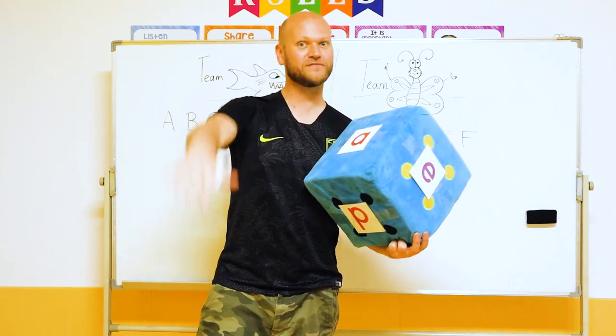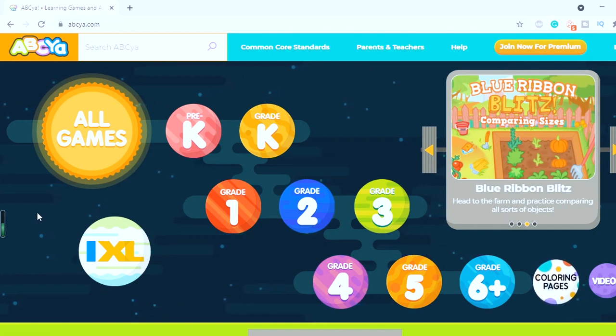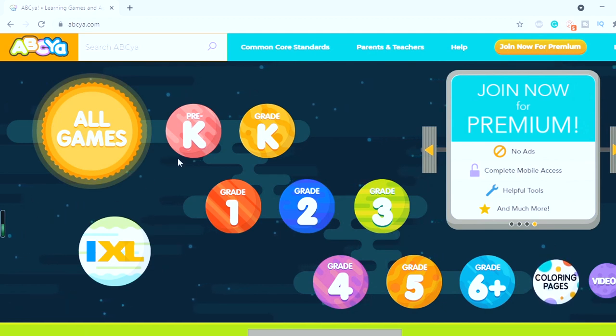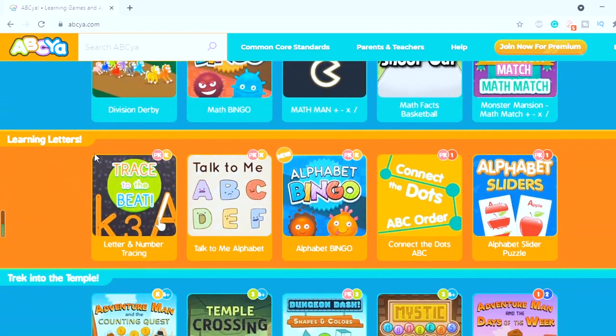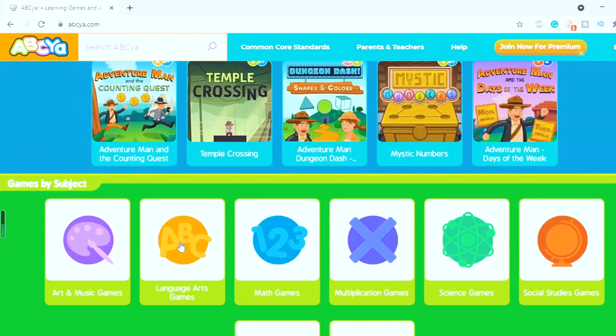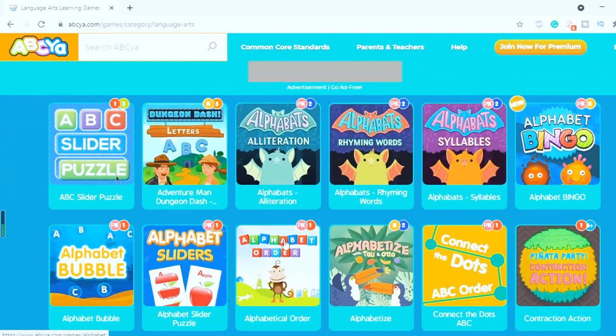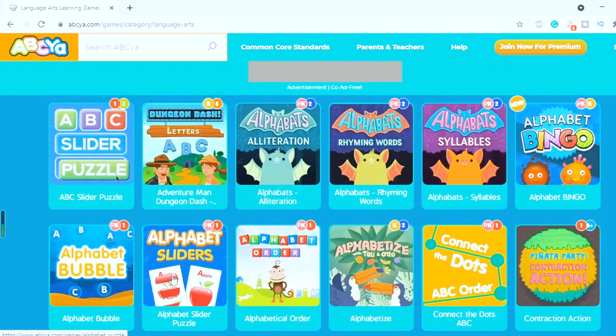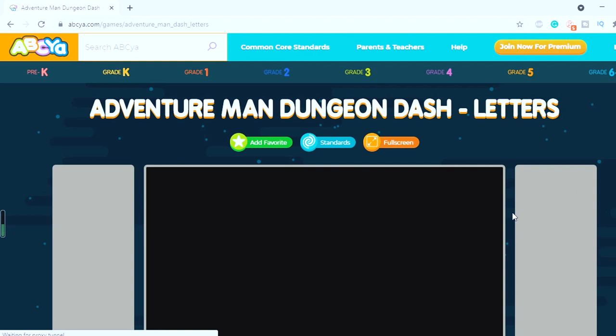Now let's have a look at game number five. So for this game, you'll need a digital touch screen in your class and log into abcya.com. So as you can see here, it shows all the different levels for games. So you can scroll down, learning letters. Here's a list of different alphabet games. You can go down to here, language arts. And as you can see, many different games guys. So these, I find these are great for the young kids. So we'll take a look at one of the games. Adventure Man Dungeon Dash.